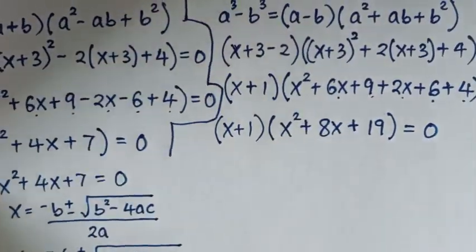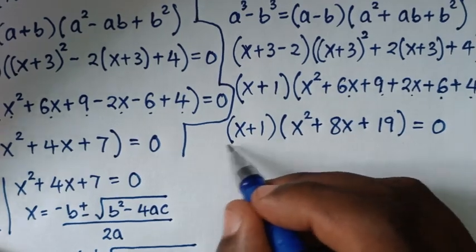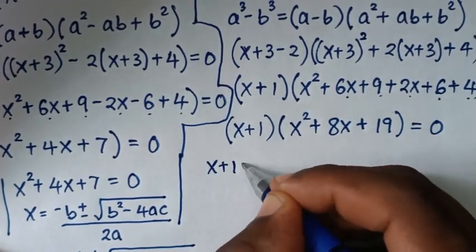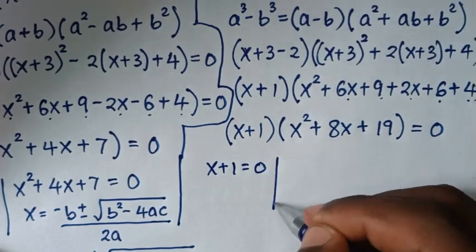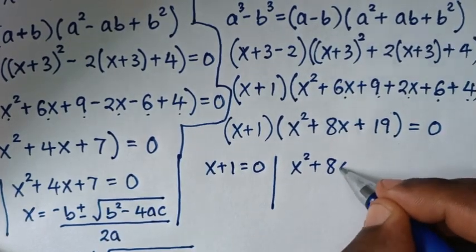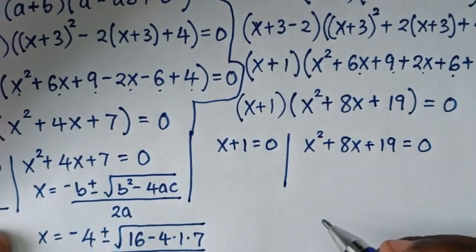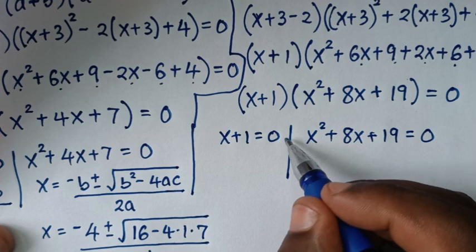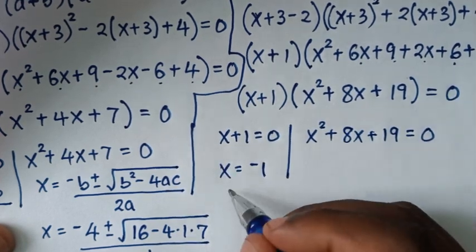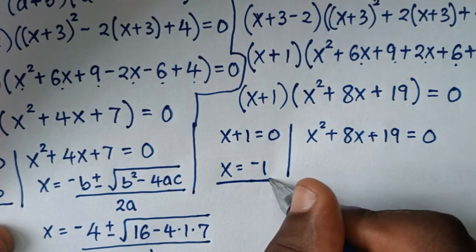Now from the second factor pair, we have two solutions: x + 1 = 0, and x² + 8x + 19 = 0. From the first, x = −1. This is the second real solution. So we have real solutions of −5 and −1.